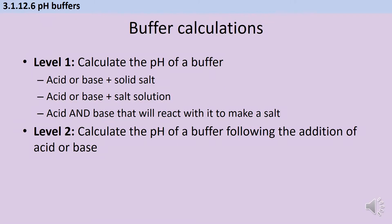As we said in the previous video, there are three different ways that we can make a pH buffer. We need to start with either a weak acid, if we're trying to make an acidic buffer which will buffer pHs below 7, or a weak base, if we're trying to make a basic buffer which will buffer pHs above 7. We also need a salt, so we can achieve this either by adding a solid salt, or by adding a solution of that salt, or by carrying out a neutralisation reaction to actually make that salt within the buffer.